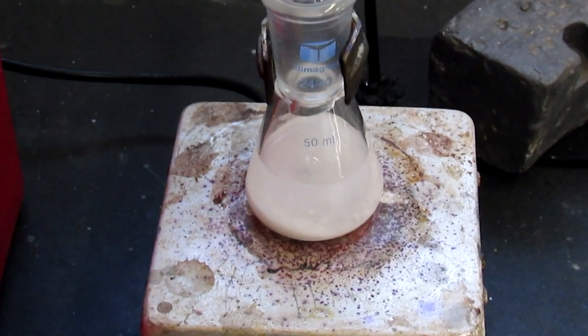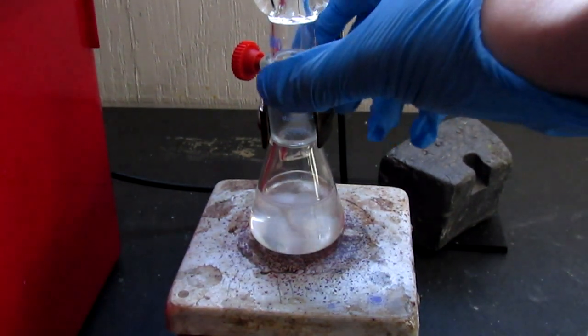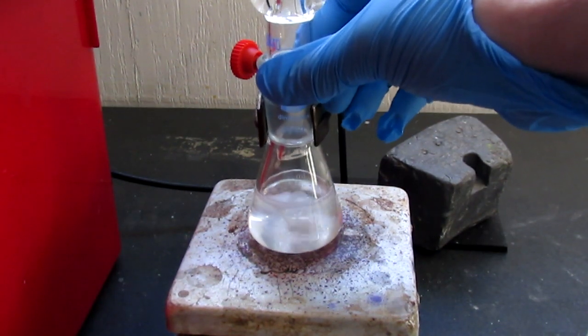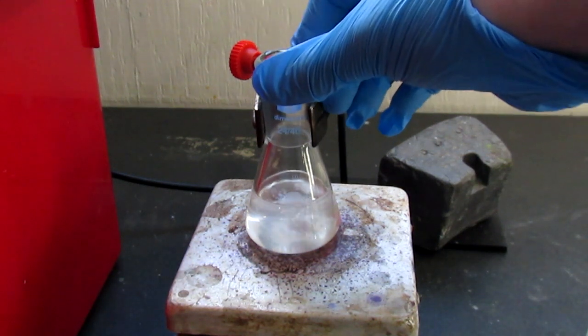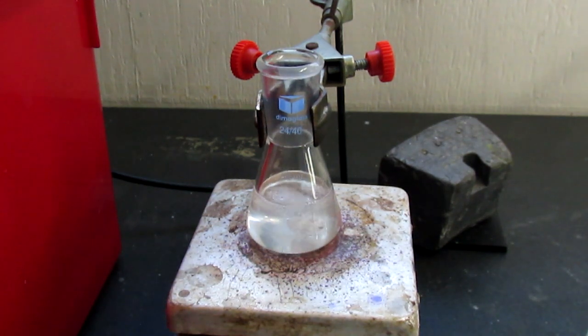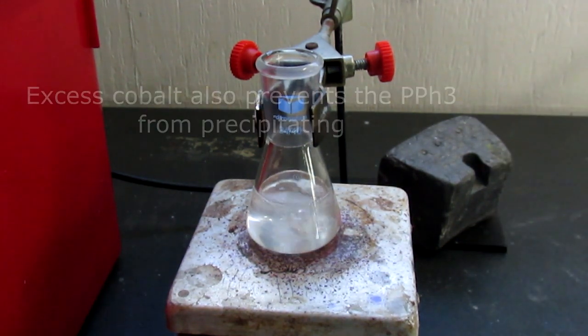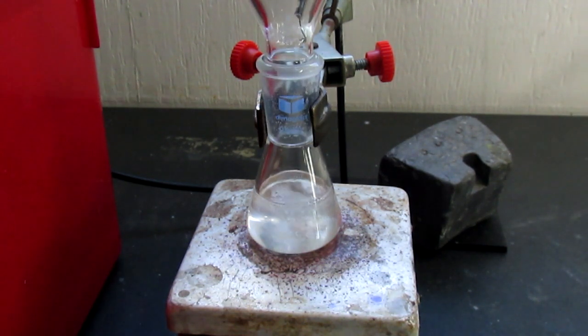The triphenylphosphine is now all dissolved, so now I'm going to add 2 grams of cobalt chloride hexahydrate. This is a slight excess, but you want to conserve the triphenylphosphine as much as possible. Alright, in it goes.